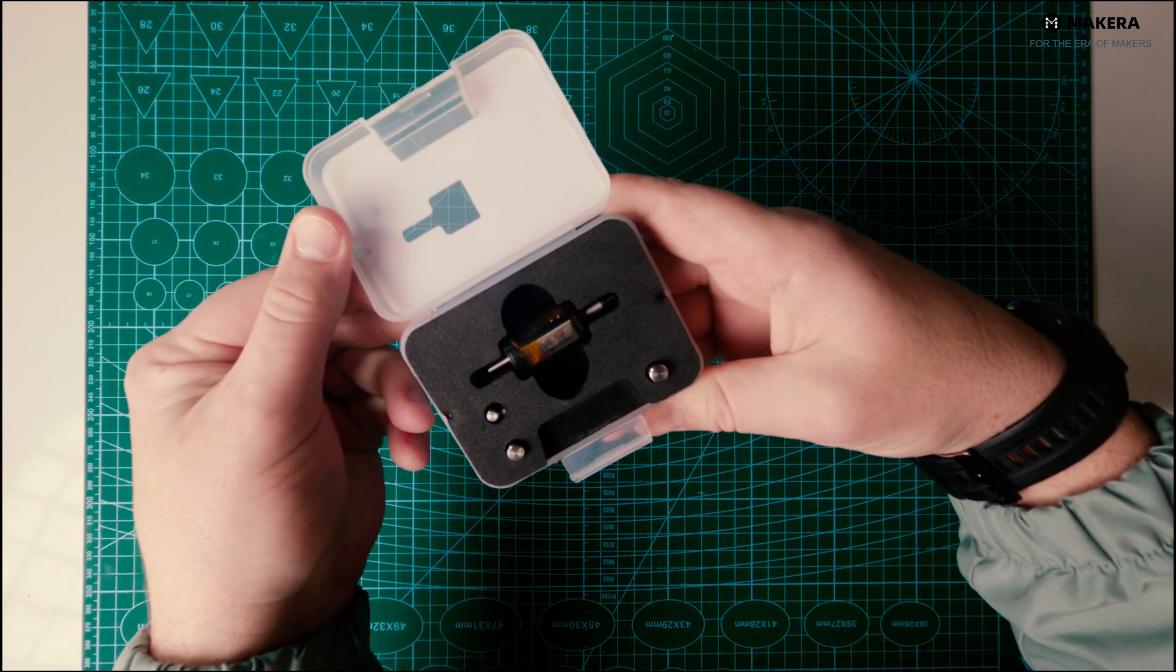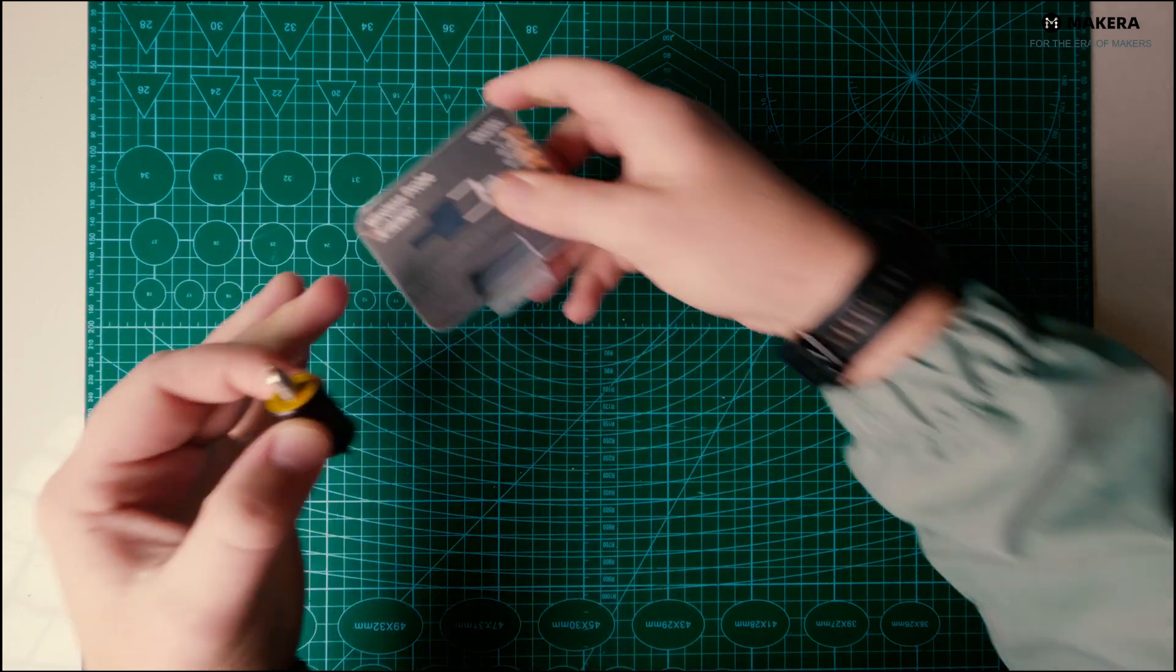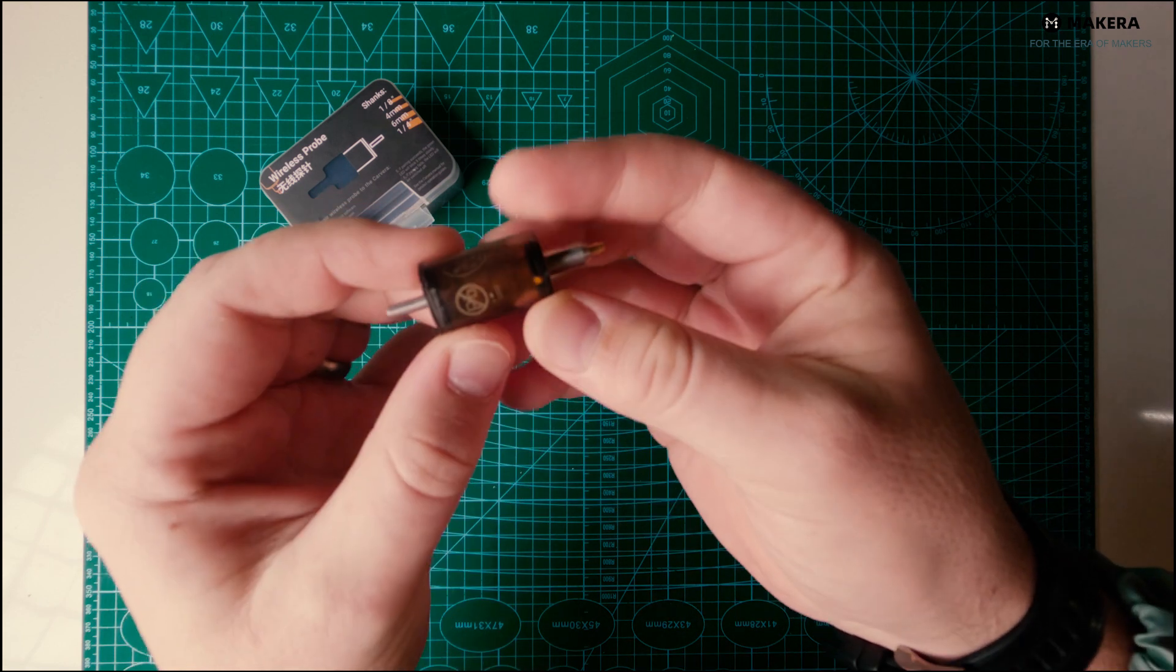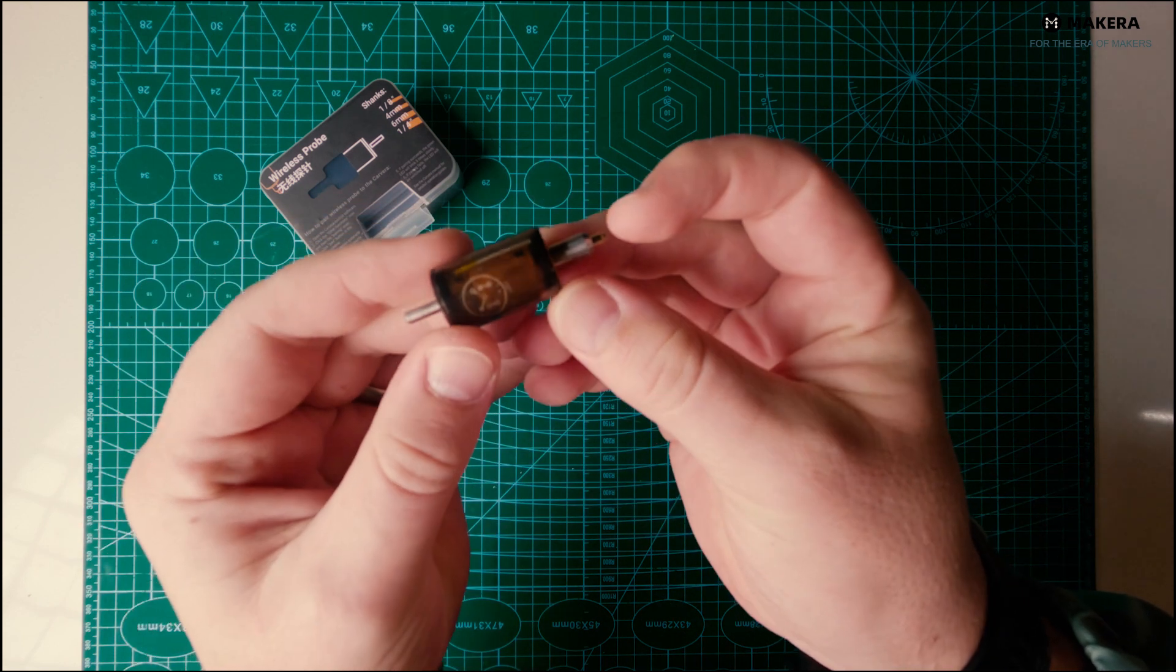The probe has a built-in battery and needs to be charged to 3.7 volts for the first time using the machine. The probe automatically charges when the machine is turned on.